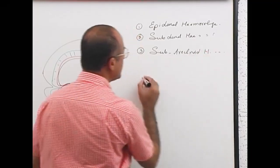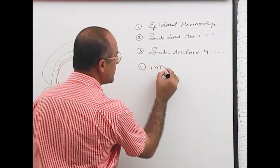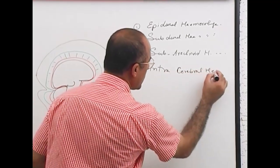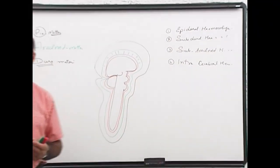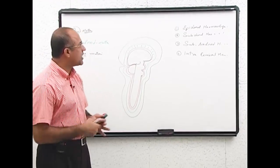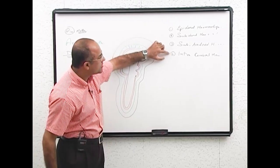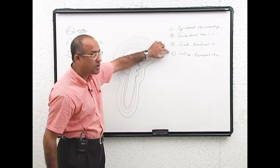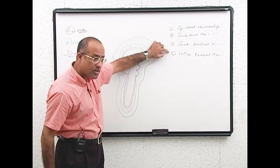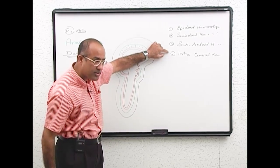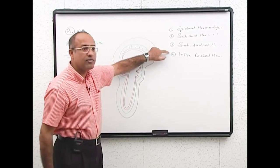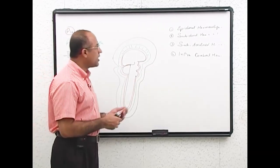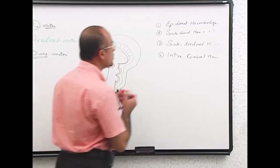These four types of hemorrhages occur at different locations, in different spaces and different places. Clinically, they have different causes and different consequences. First of all, we will talk about epidural hemorrhage.